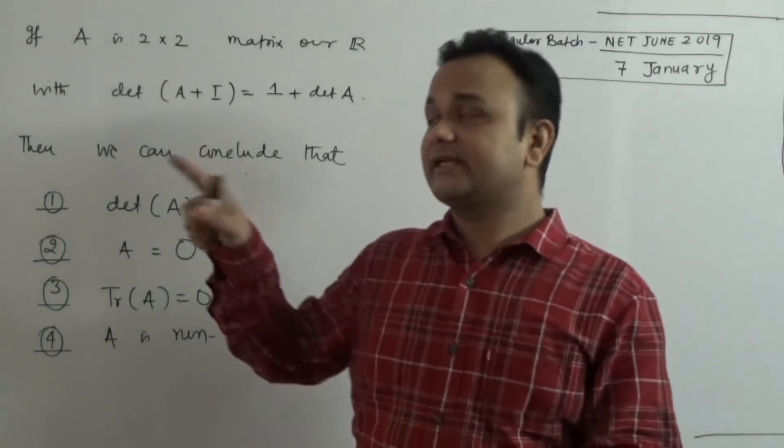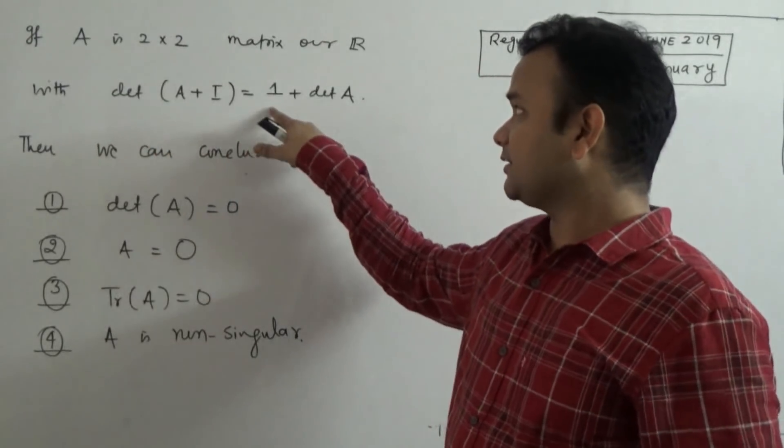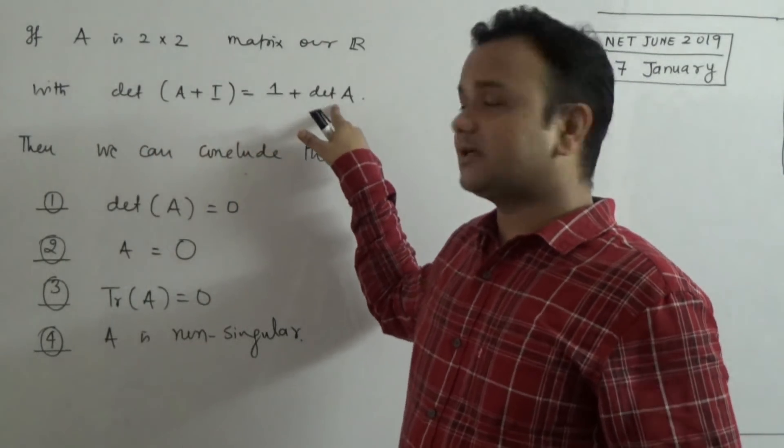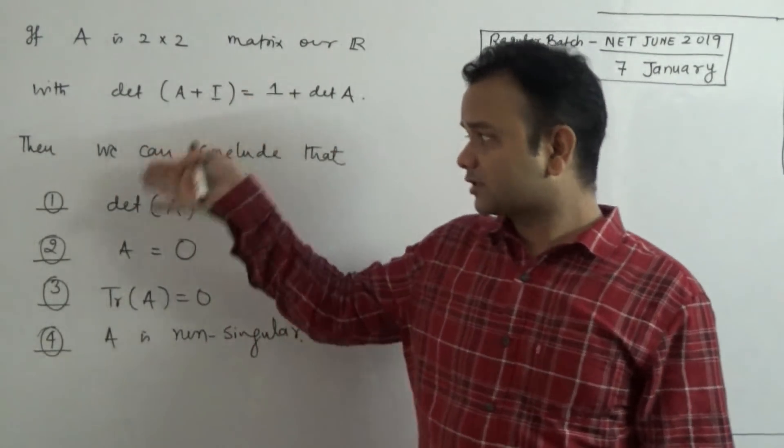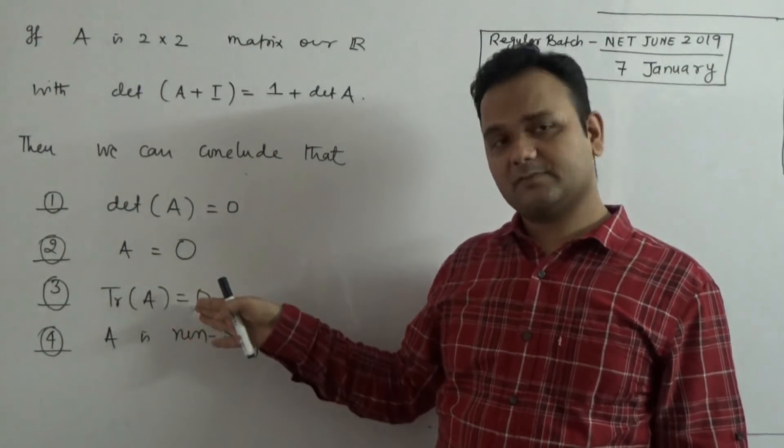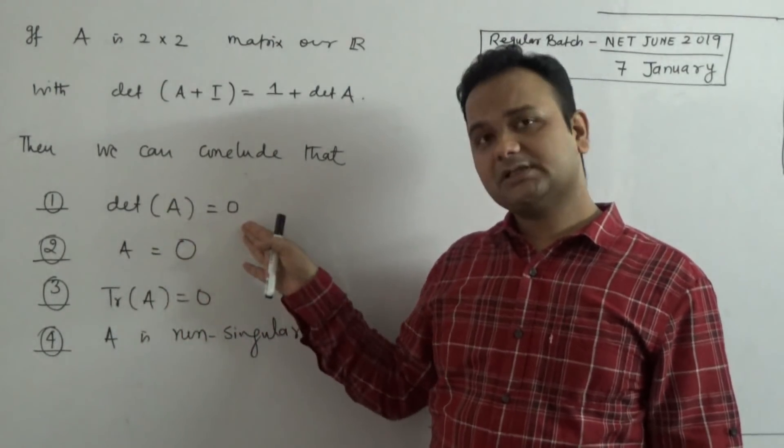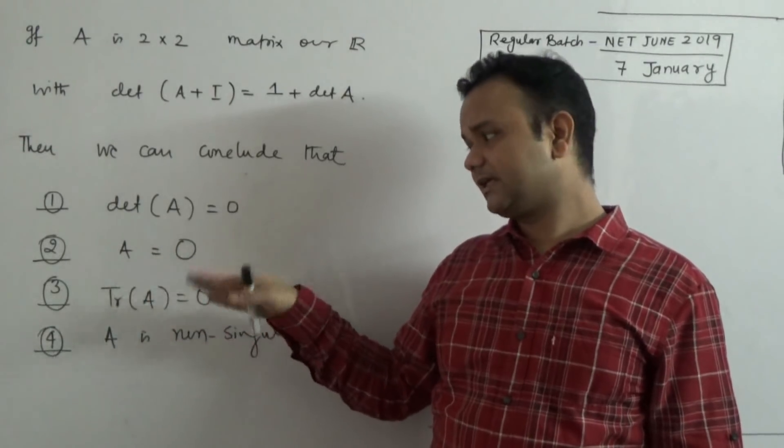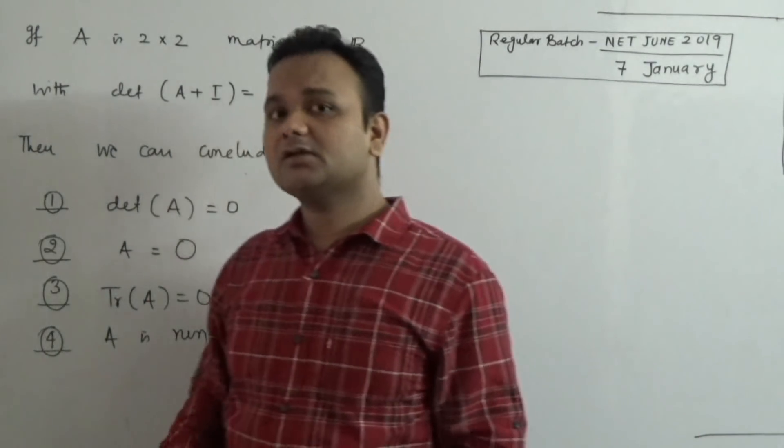Now, what is given to you? Given that determinant of A+I is equal to 1 plus determinant of A, then you have to conclude what is going to happen. What you can say about the trace, what you can say about the determinant, what you can say about A and whether A is singular or non-singular.